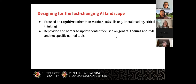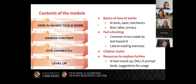Now Ben is going to talk about what actually was in this module. With all of those conversations and considerations, we landed on a module with four separate sections. The first was some basics on how AI works — examples of AI tools and what they can do, the basic mechanics of how generative AI comes up with responses or images, but also issues of bias, labor, and privacy, which we thought were basic building blocks of how these tools actually work.